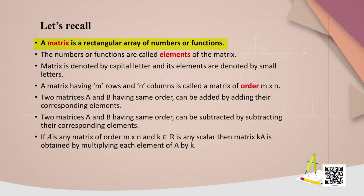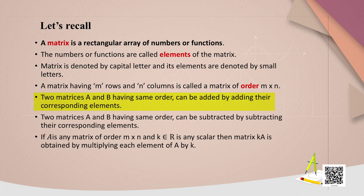A matrix is a rectangular array of numbers or functions. The numbers or functions are called elements of the matrix. A matrix is denoted by a capital letter and its elements are denoted by small letters. A matrix having m rows and n columns is called a matrix of order m by n. Two matrices A and B having the same order can be added or subtracted by operating on their corresponding elements. If A is any matrix of order m by n and k is a scalar quantity, then the matrix kA is obtained by multiplying each element of A by k.